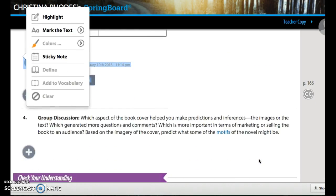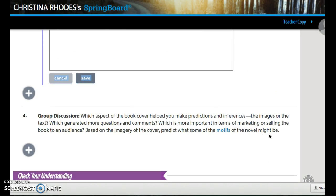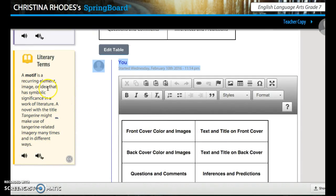And then the last piece, your group discussion, which aspect of the book cover helped you make predictions and inferences, the images or the text, which generated more questions and comments, which is more important in terms of marketing or selling the book to an audience. Based on the imagery of the cover, predict what some of the motifs of the novel might be. Motifs is one of our new vocabulary words. And it is a recurring element, image or idea that has symbolic significance in a work of literature. A novel with the title tangerine might make use of tangerine related imagery many times and in different ways. So you're going to answer the last piece with your group and then we're going to share answers.